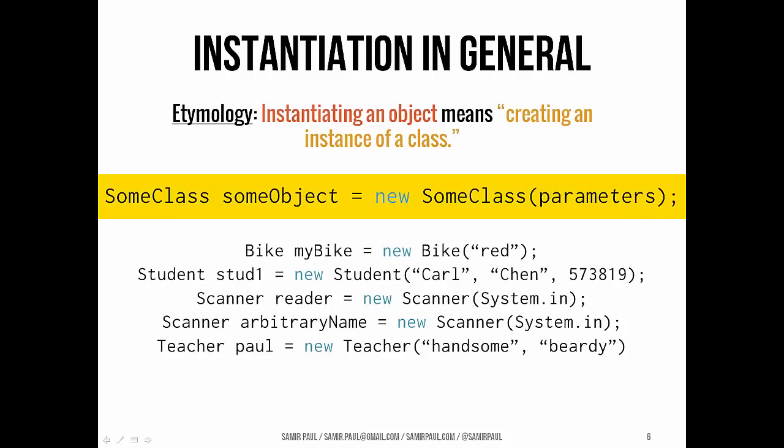That brings us to the point of instantiation and what that means. So I just mentioned instantiating an object. That means creating an instance of a class or creating one particular example of a class. In the last situation, we were talking about creating a new scanner object. Here, if you look at the examples below this yellow line, we're saying, hey, I want to make a new bike object, and its color is red, and I want to call it my bike. You can see these statements are basically read right to left. Hey, I want to make a new student. This student has first name Carl, last name Chen, ID number 573819, and I want to refer to him as student1 or stud1.